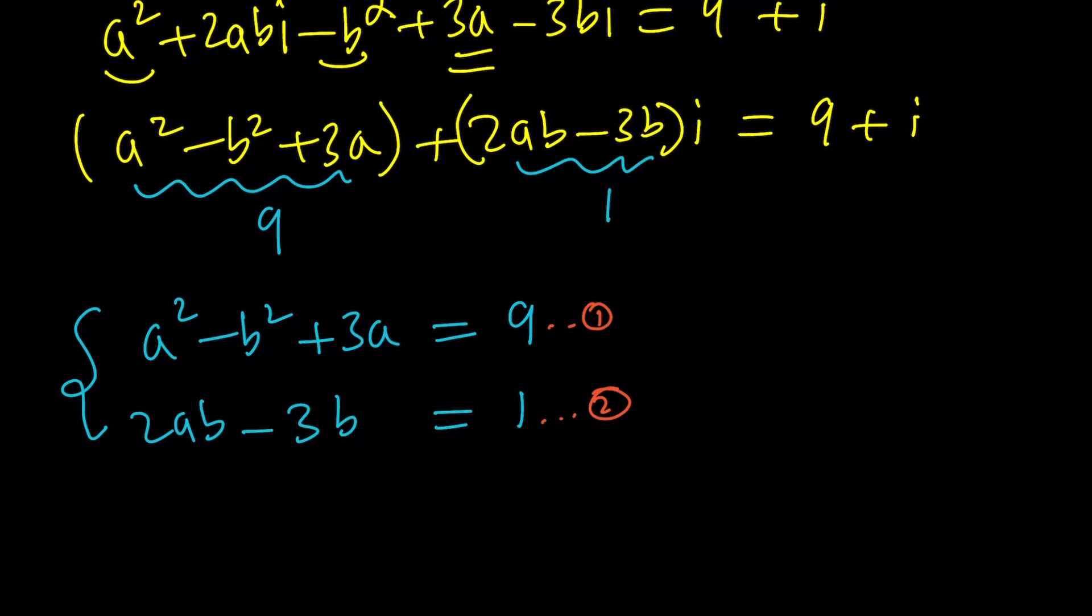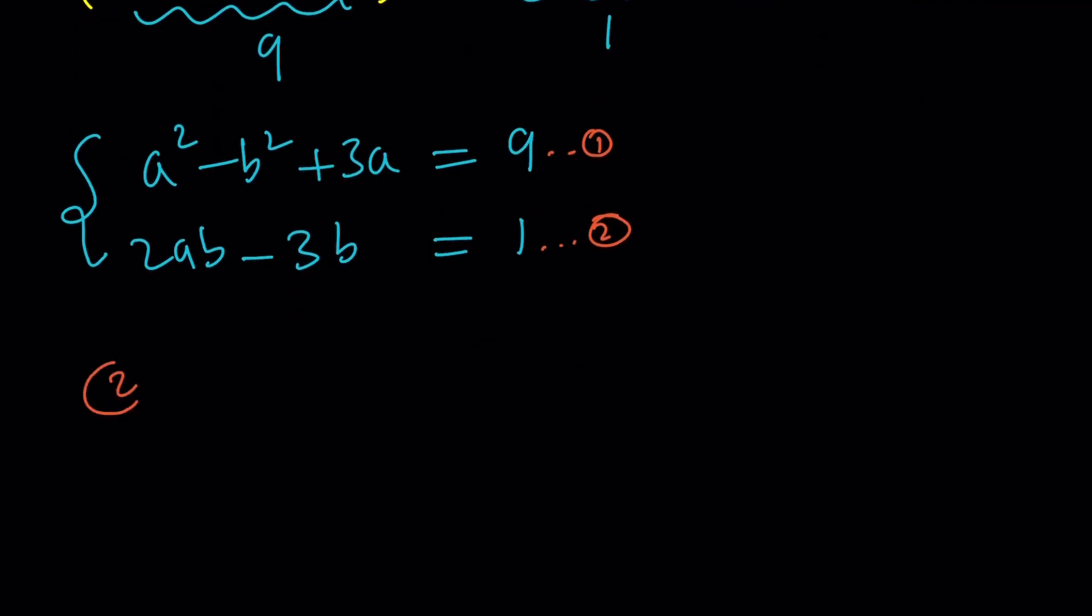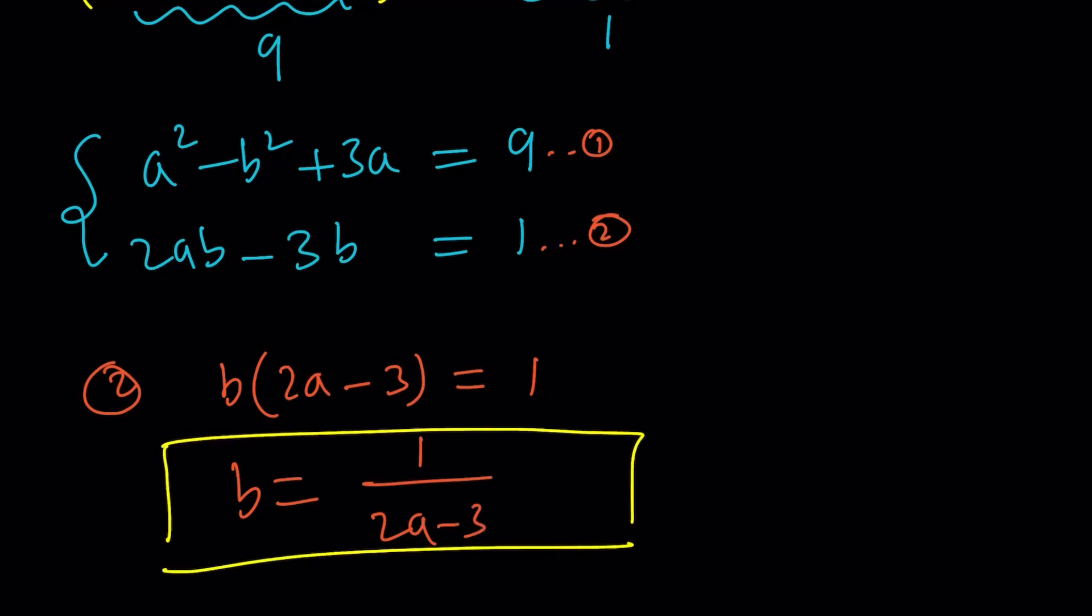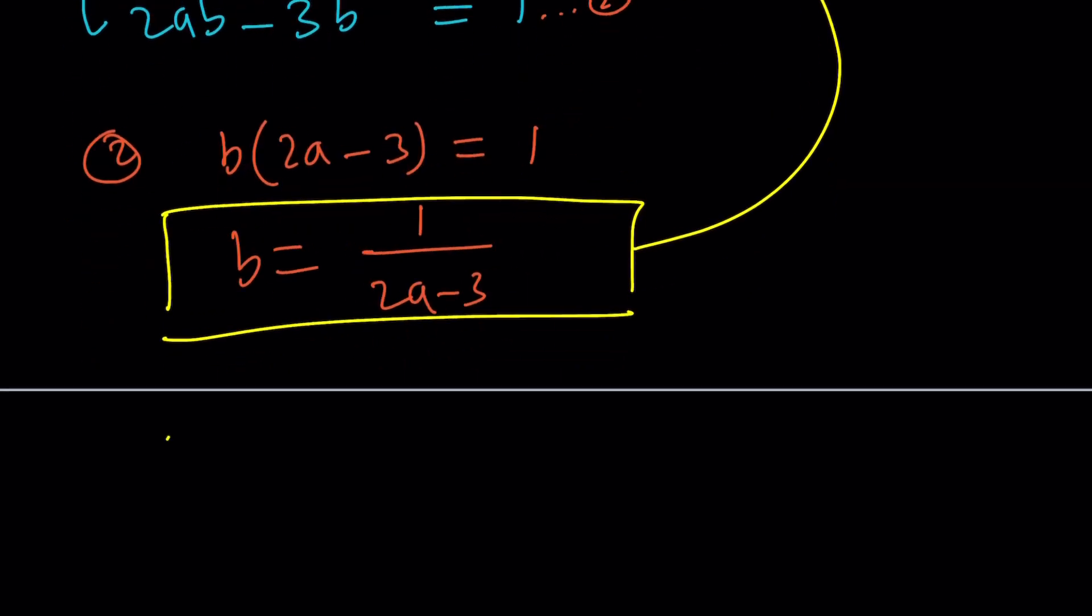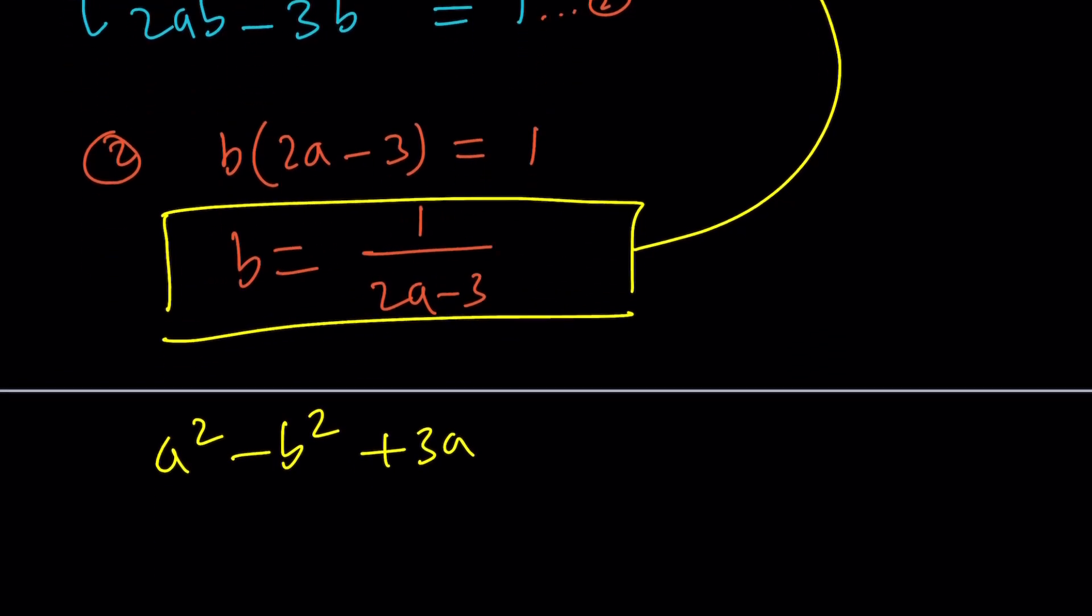I'd like to start with the second equation. In the second equation if I take out a B I get 2 A minus 3. So from here we can isolate B and write it as 1 over 2 A minus 3. This is what I would like to substitute into the first equation. Let's rewrite the first equation. A squared minus B squared plus 3 A is equal to 9.